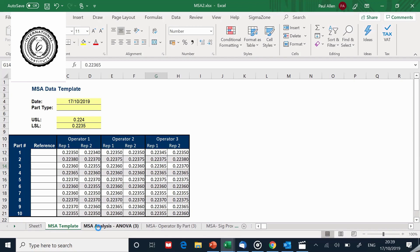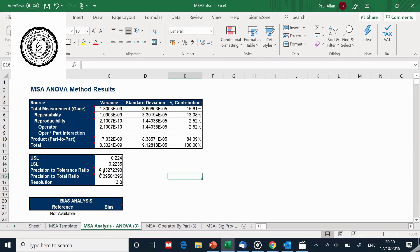Now if we take a look at the results, the precision to tolerance is 0.43, so 43% of the tolerance is being used up by measurement error. If we look at precision to total, 39% of all the variability that we are seeing is coming from the measurement system. So clearly that doesn't pass the normal rules which would be 10% in this case.